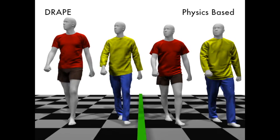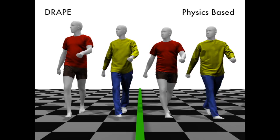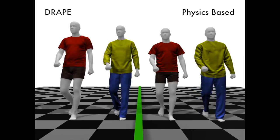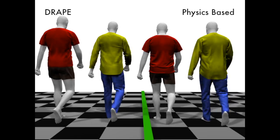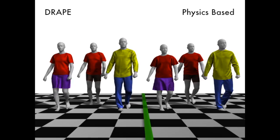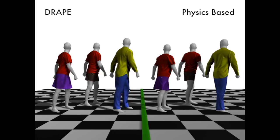Here we compare drape with a physics-based simulation system. Drape generalizes to different body shapes, while physics-based simulation cannot. The importance of this is that changing the body shape does not require redesigning the clothing.